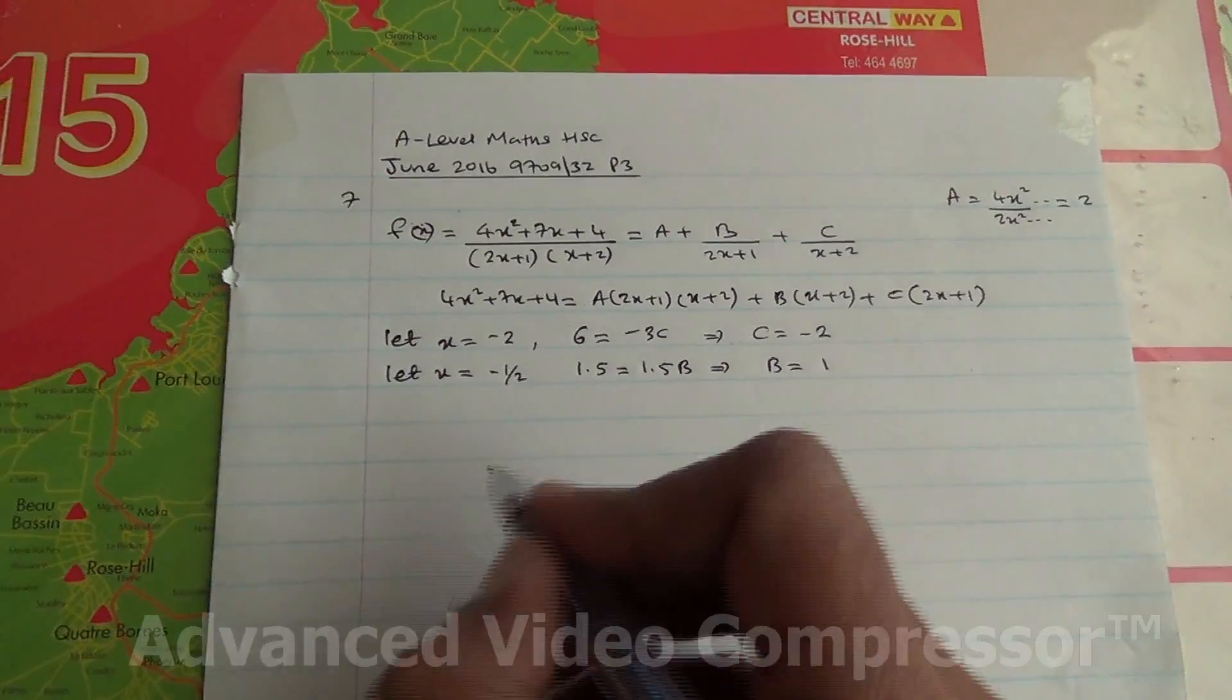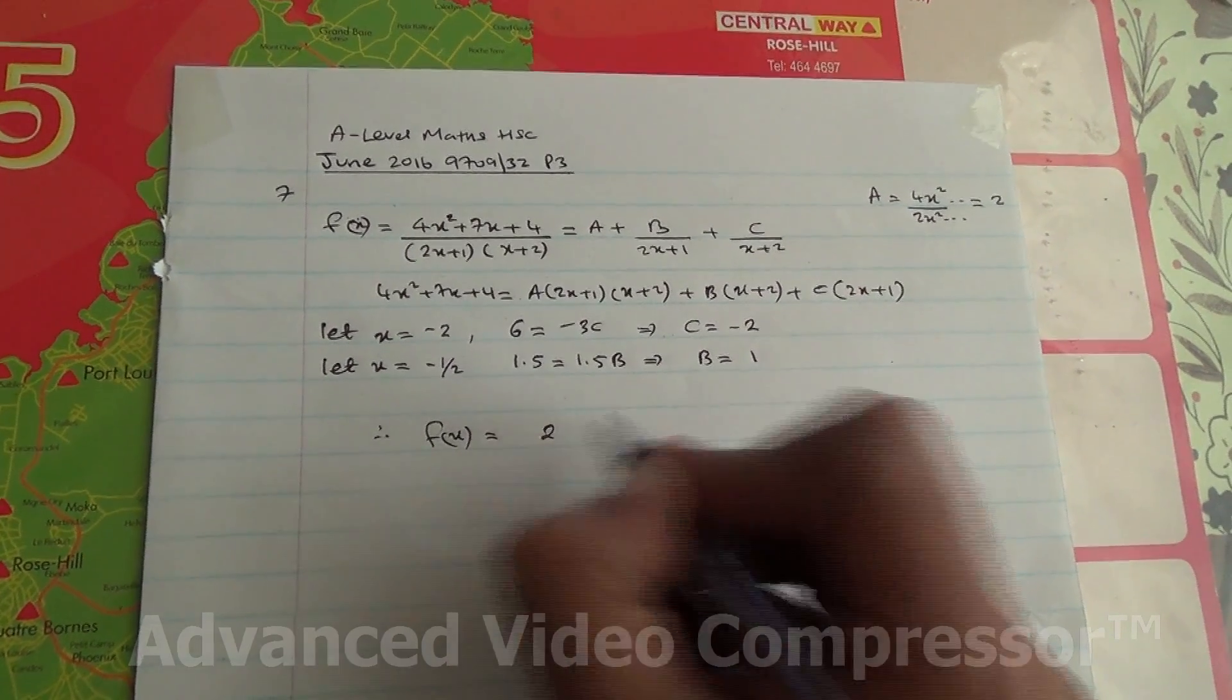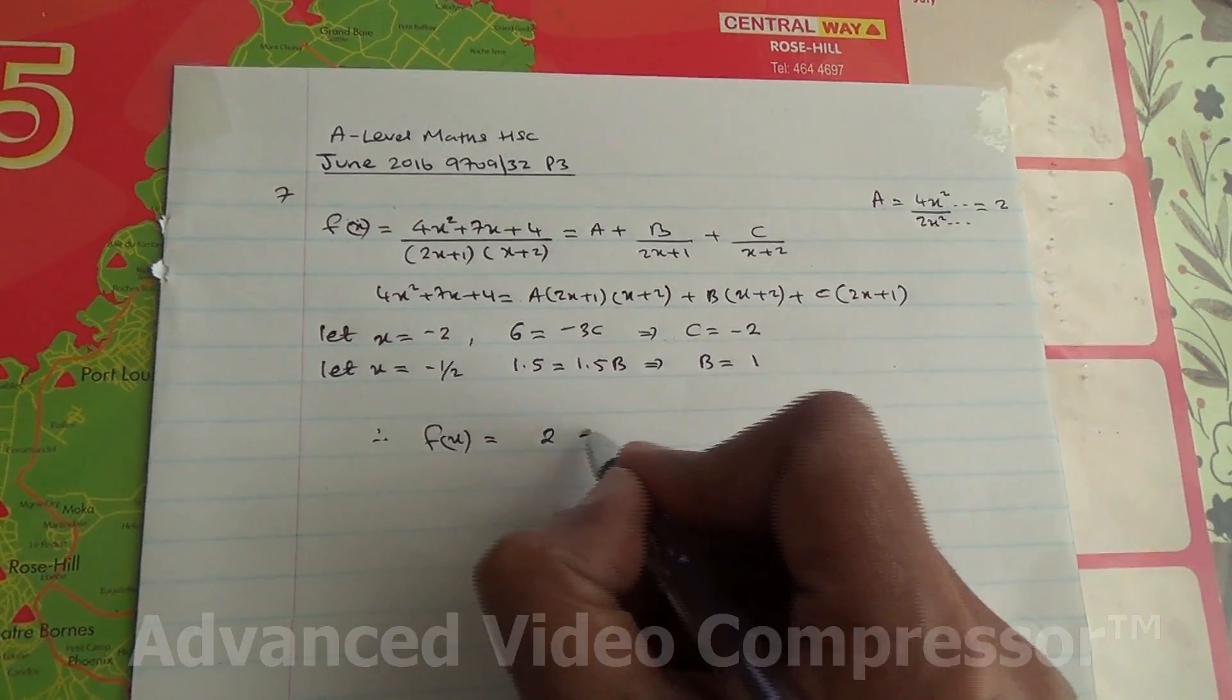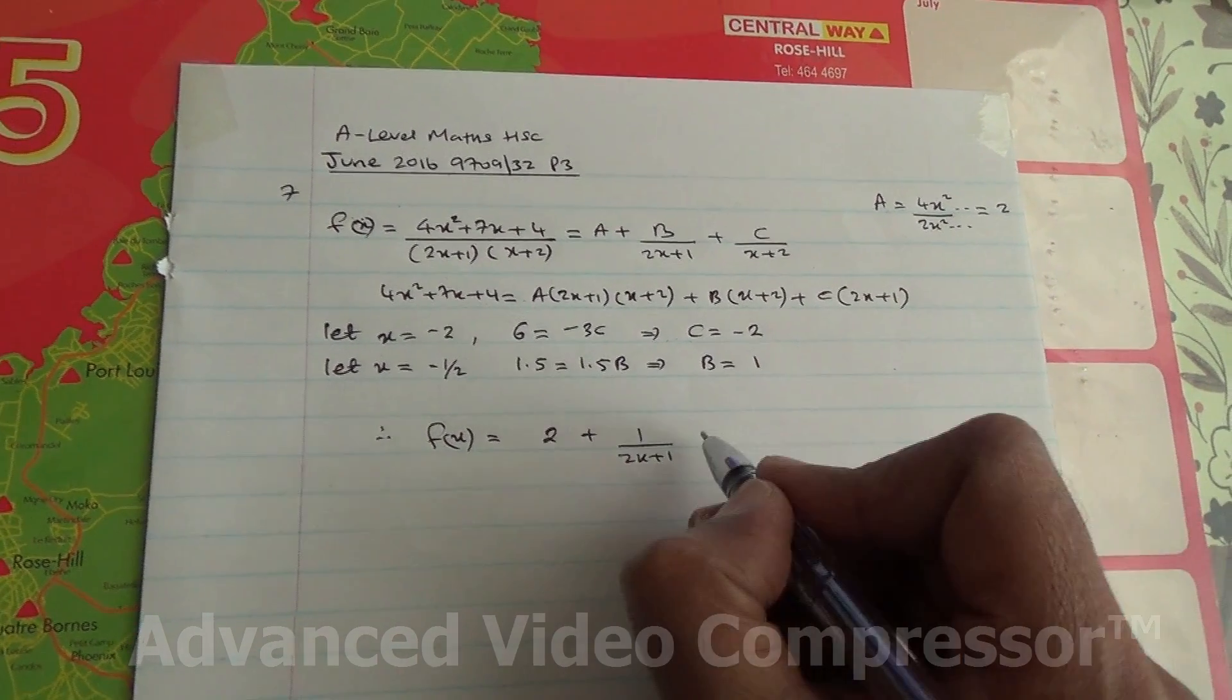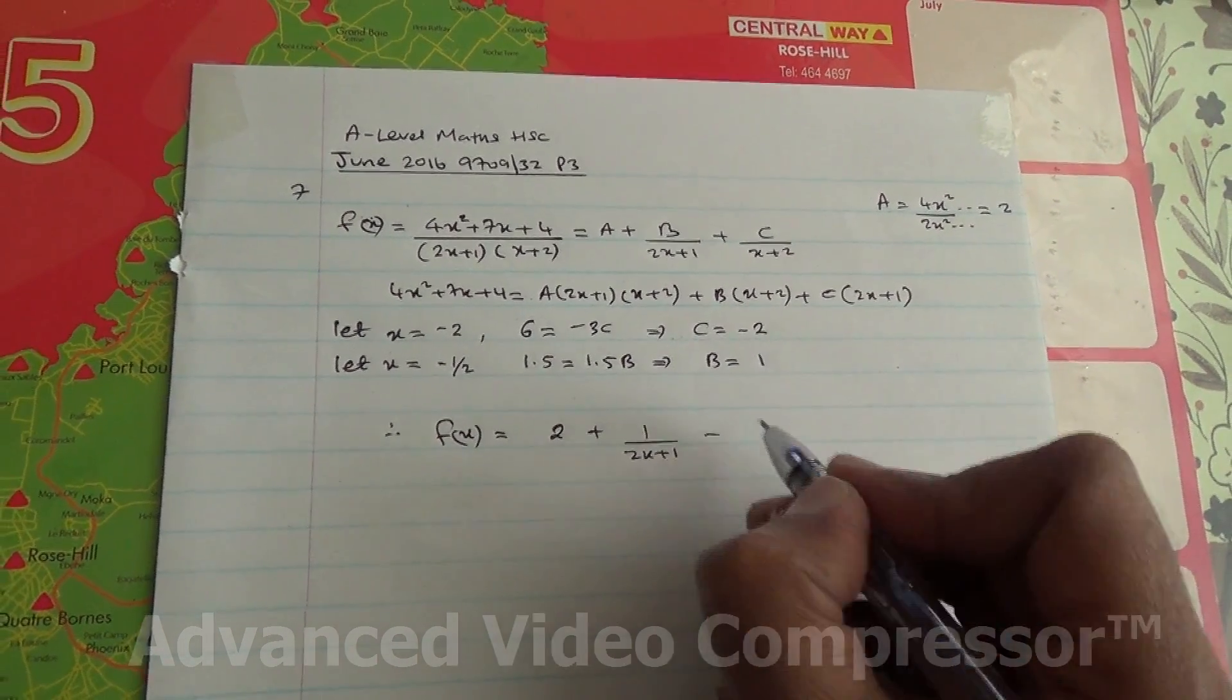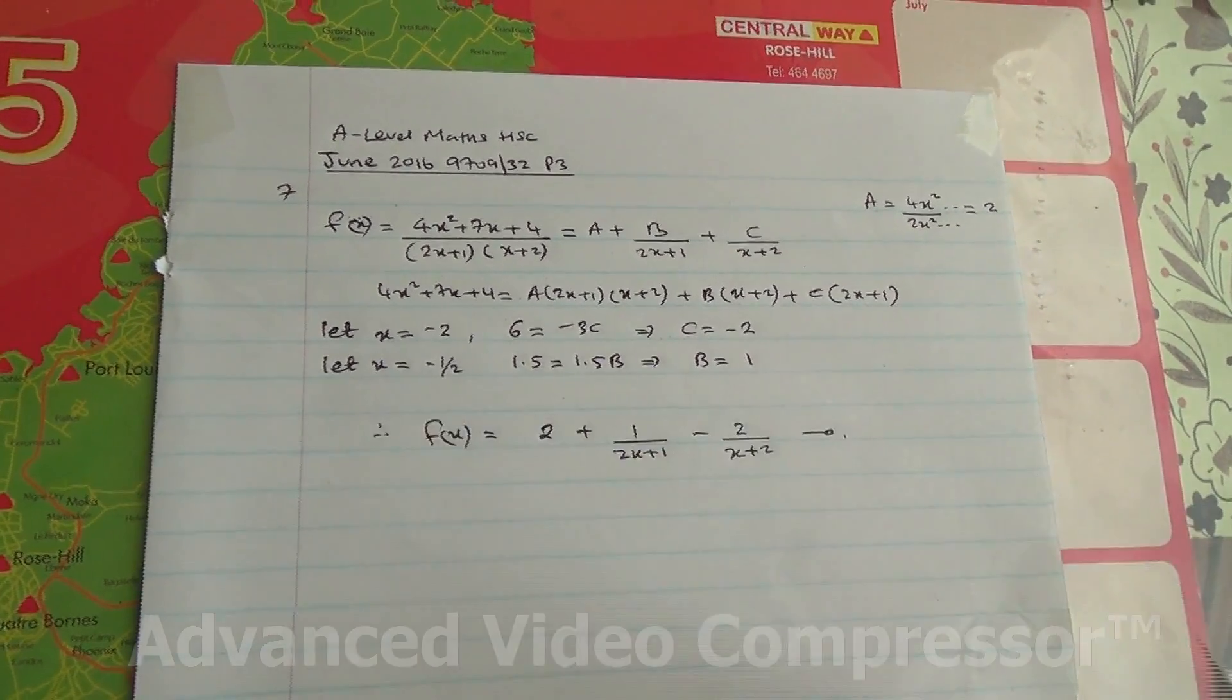So if we have to express this in partial fraction now, we can say therefore, f(x) is equal to 2 plus 1 over (2x plus 1) minus 2 over (x plus 2). So this is the first part of the question. Done.